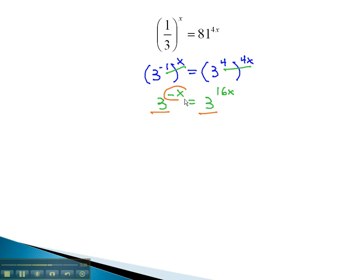Once we have the same base, we can also say that the exponents must be equal to each other. Negative x equals 16x.